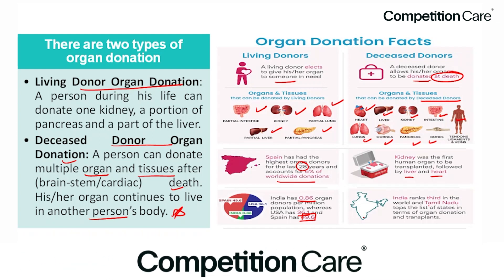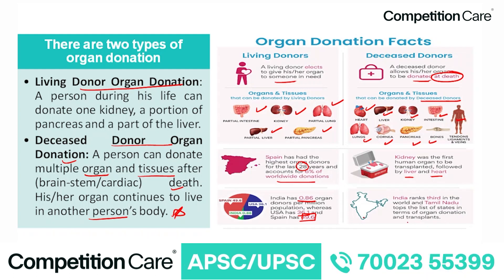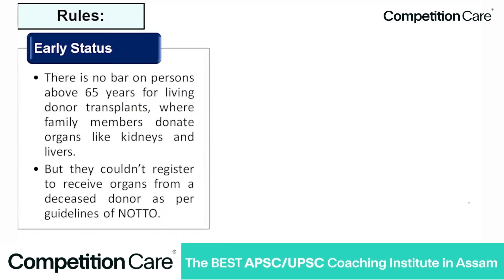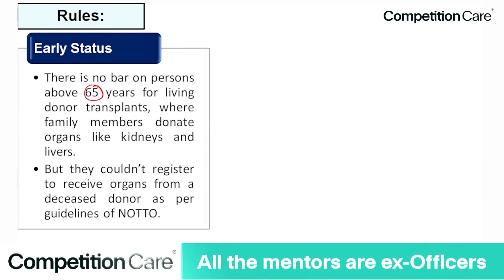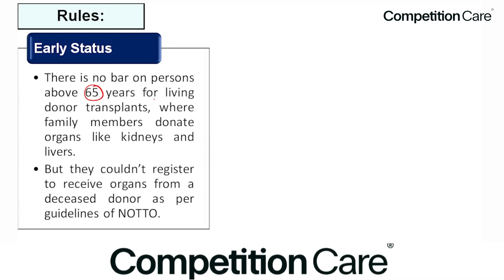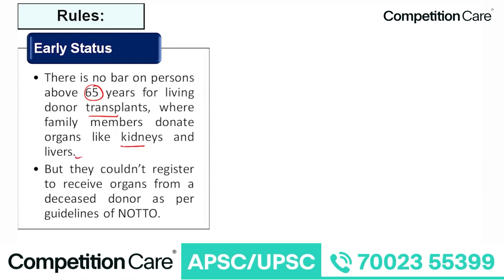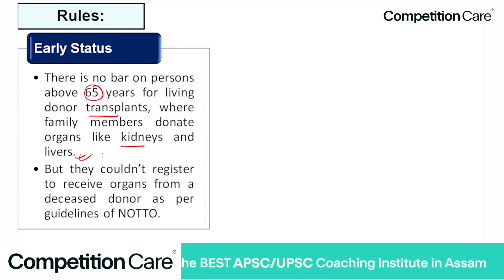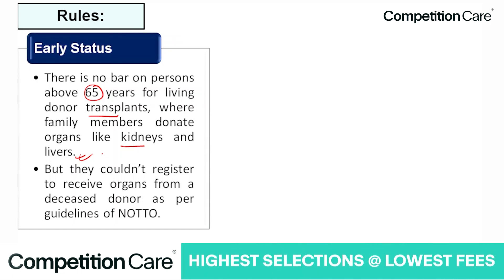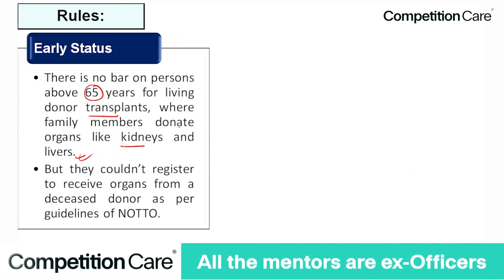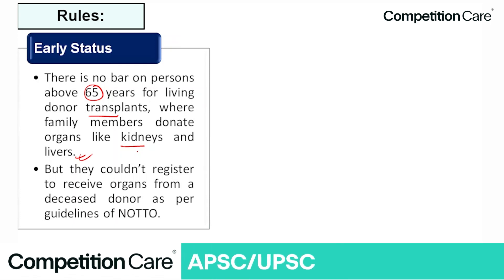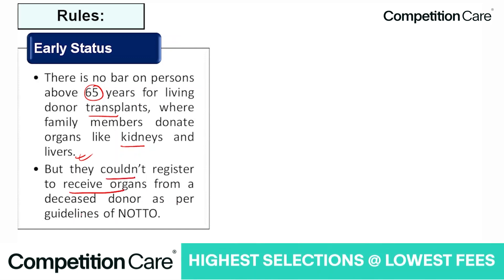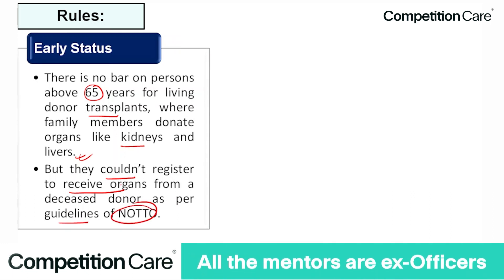India ranks third in the world, and Tamil Nadu tops the list of states in terms of organ donation and transplant. Regarding the new rules: there is now no upper bound for persons above 65 years for living donor transplants where family members donate organs like kidneys and liver. However, persons above 65 years could not previously register to receive organs from a deceased donor as per NOTTO guidelines.